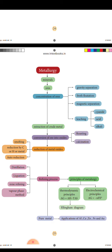Metallurgical process: Concentration of ores. There are several methods. Gravity separation, froth flotation, magnetic separation and leaching.